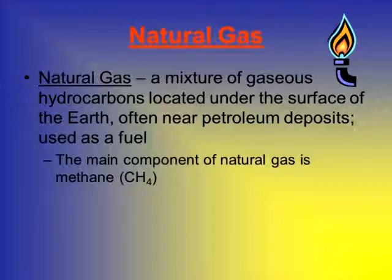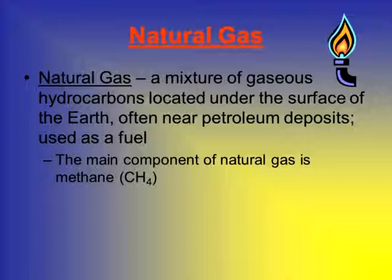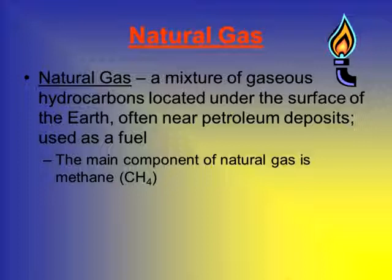Natural gas, on the other hand, is a mixture of gaseous hydrocarbons. So whereas petroleum was a liquid, natural gas is of course a gas. These are located underneath the surface of the earth, and they're often really close to areas where we find petroleum. It's used as a fuel source, and the main component of natural gas is what is called methane.